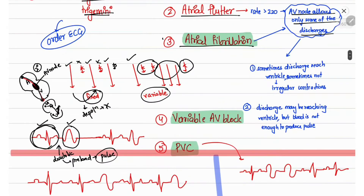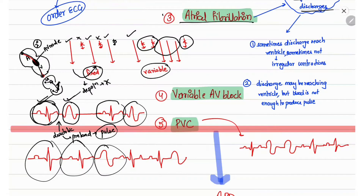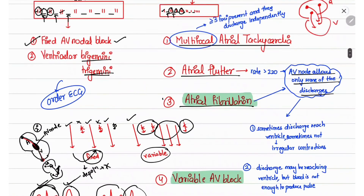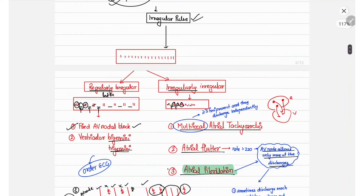In ventricular bigeminy, every second beat is a VPC: normal, then VPC, then normal, then VPC. In trigeminy, every third beat is a VPC: two normal beats followed by a VPC. This recurring VPC just after a normal impulse reduces diastolic filling time, leaving insufficient blood in the ventricle, so the pulse is missed — producing a regularly irregular pulse.